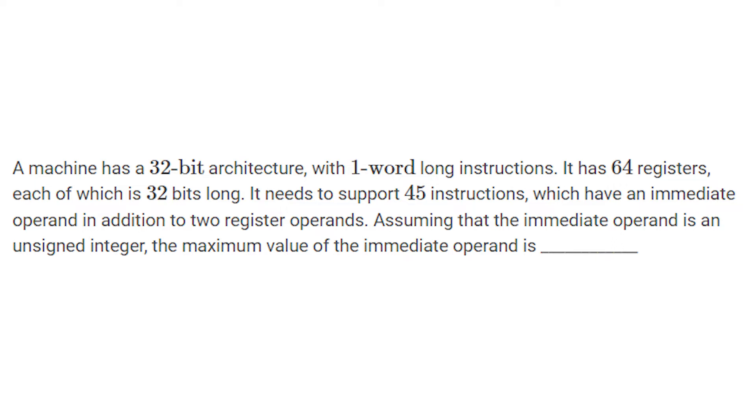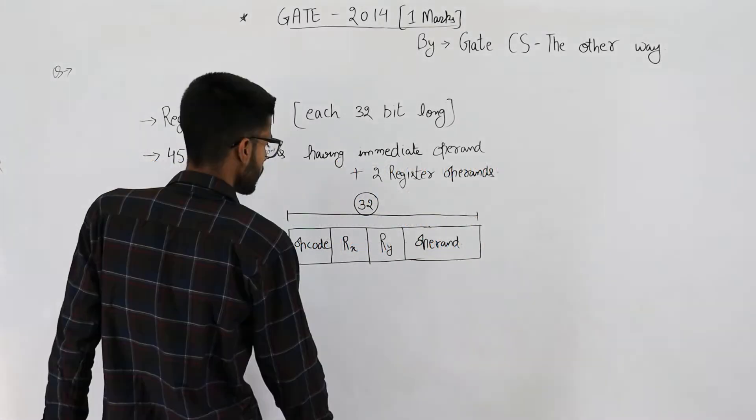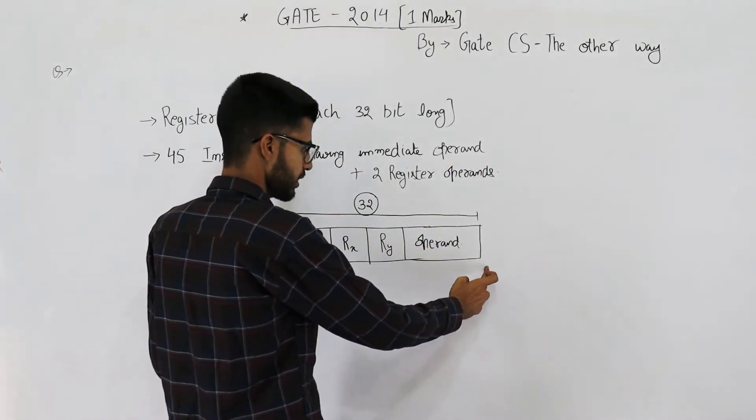It needs to support 45 instructions which have an immediate operand in addition to two register operands. Assume that the immediate operand is an unsigned integer. The maximum value of the immediate operand is... Okay, first of all, you are given the instruction is one word long, not one bit, and one word is 32 bits because we are using 32-bit architecture.